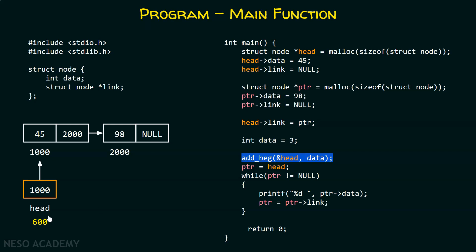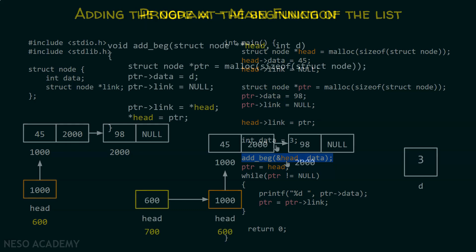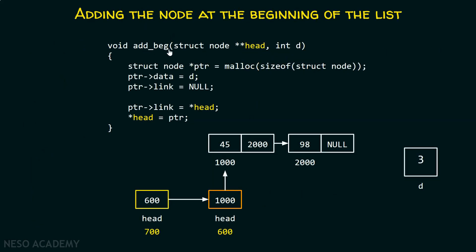Let us suppose that the address of this head is 600. So, instead of passing this address 1000, which is the address of the first node of the list, we will pass the address of head — that is 600 — which is the address of this head pointer. So, here we need to put this ampersand in front of head. Now, in the add_back function, we will make this change: we will replace struct node* head by struct node** head. We will make this a double pointer, that is a pointer to a pointer.